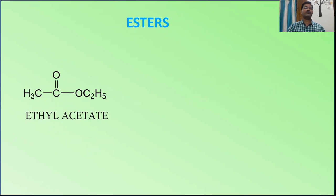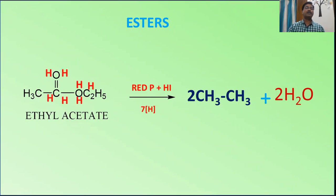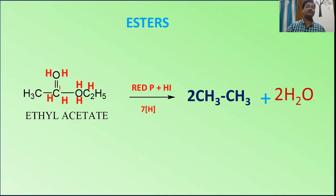For esters — ethyl acetate, whose IUPAC name is ethyl ethanoate — when treated with the reagent, we get two molecules of ethane because there are two carbon groups. The two oxygens produce two water molecules. Counting the hydrogens: two for each oxygen plus additional hydrogens for the carbons to form ethane — eight hydrogens are required in total.